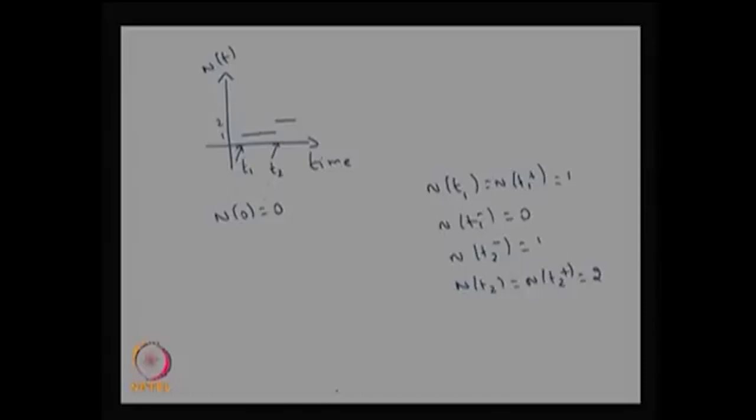Whenever you observe the sample path of the Poisson process, it is always going to be non-decreasing, right-continuous, and increases by jumps of size 1 at the time epochs of arrivals.